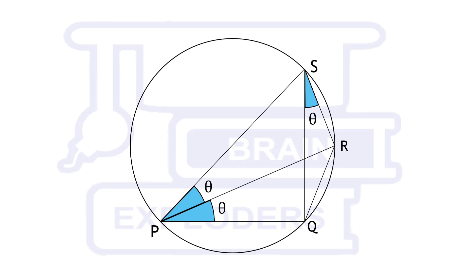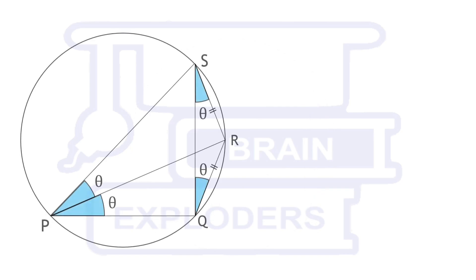And from here angle RQS is also theta. Since two angles of triangle RSQ are same, it means it is an isosceles triangle, hence SR is equal to RQ.